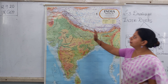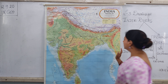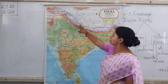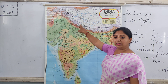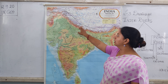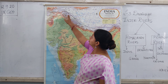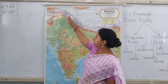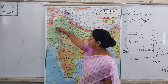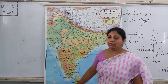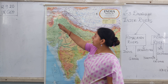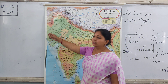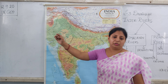Now on the map of India, we shall start with the Indus river. The Indus river originates from the Mansarovar lake in Tibet. From here it flows to Jammu and Kashmir in the Ladakh region, and then it enters into Pakistan at Mithankot, where it is divided into five parts before entering the sea.